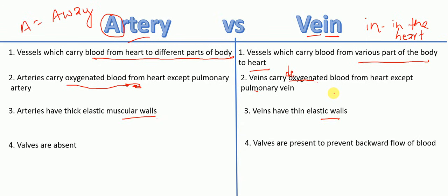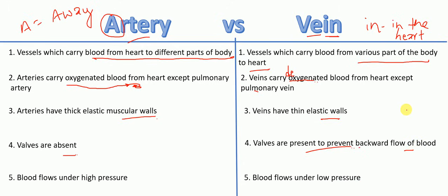In arteries, valves are absent, whereas in veins, valves are present to prevent the backward flow of blood. Finally, in arteries, blood flows under high pressure, whereas in veins, blood flows under low pressure.